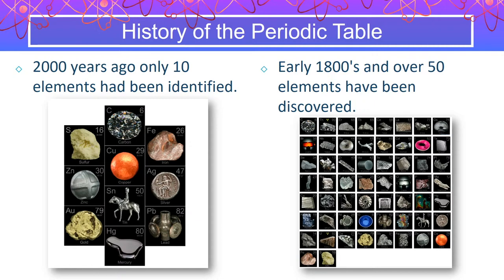Fast forwarding about 1800 years, we'd now discovered over 50 elements, which is very exciting. What's interesting is our periodic table today actually has 118 elements on it — that's another 68 elements that in the past 200 years have been discovered or even synthesized, meaning made in the lab. So we've done a lot more in the past 200 years than in the 1800 before that.